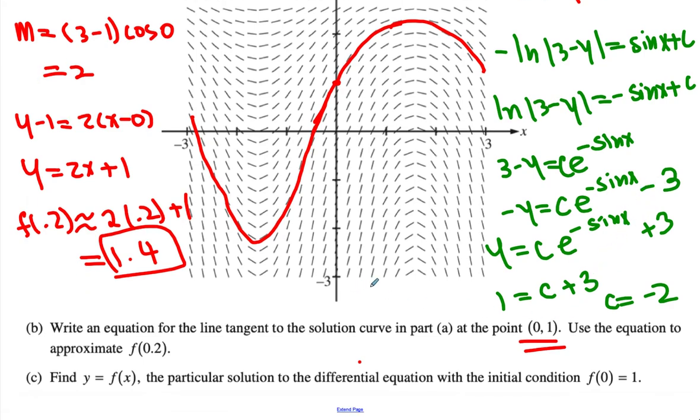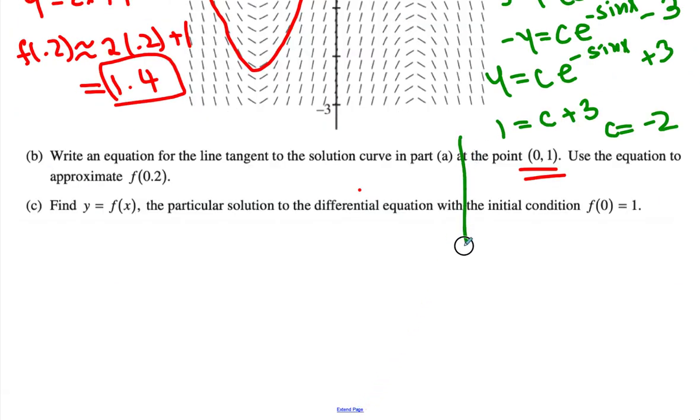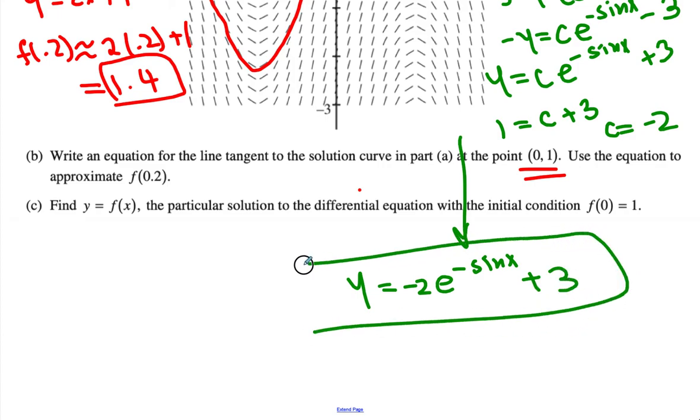So then what we end up getting is, if I write down the final solution, y equals negative 2 times e to the (negative sine of x) plus 3 becomes our final answer.